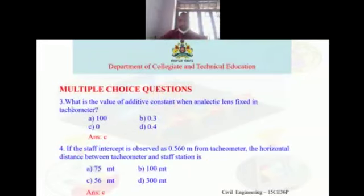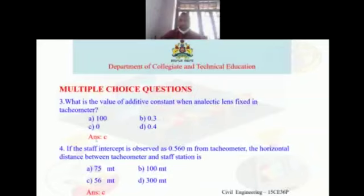Third question: what is the value of the additive constant when an analytic lens is fixed in the tacheometer? Options: a) 100, b) 0.3, c) 0, d) 0.4. The answer is c, that is 0.